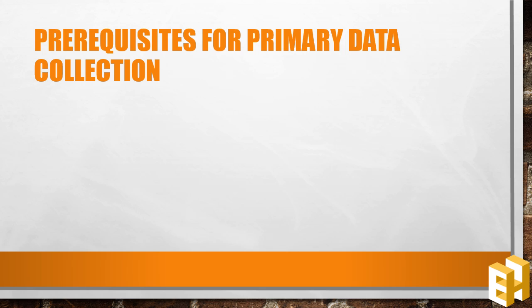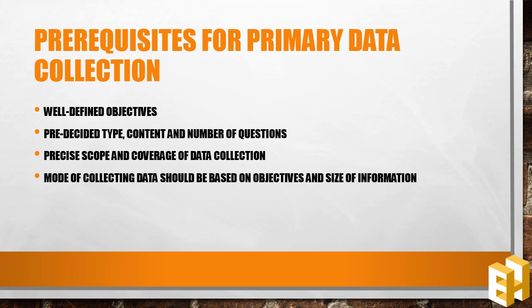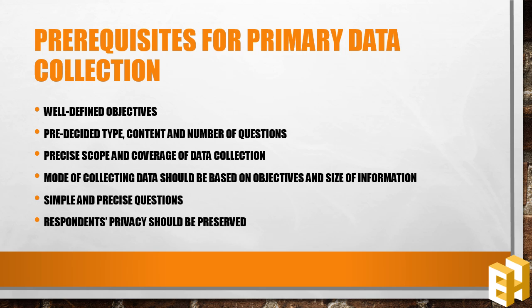What are the prerequisites for collecting primary data? Firstly, the objectives should be very well defined. Secondly, the type, content and number of questions to be asked should be pre-decided. Thirdly, the scope and coverage of data collection should be precise and clear to the investigator. Fourthly, the mode of collecting data should be selected based on the objectives and size of information to be collected. Fifthly, the questions for the interviewer should be simple and precise. Lastly, the respondents' privacy and confidentiality should be preserved.